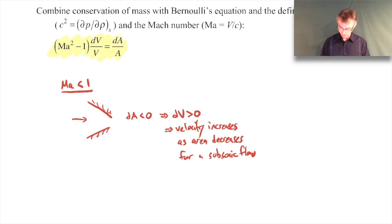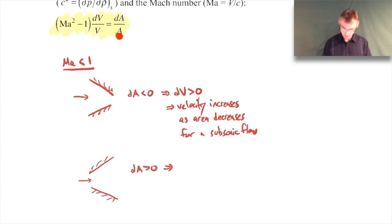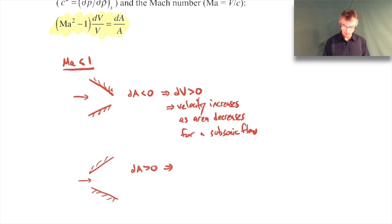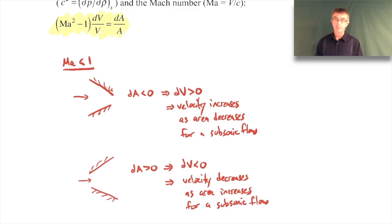For the opposite case - when the area is opening up (dA positive) - the right-hand side is positive, but (M² - 1) is still negative for subsonic flow. So in order for the left-hand side to be positive, dV has to be negative. The velocity decreases as the area increases for a subsonic flow. And if dA is zero (like a straight pipe section), then dV must also be zero - the velocity just remains constant.